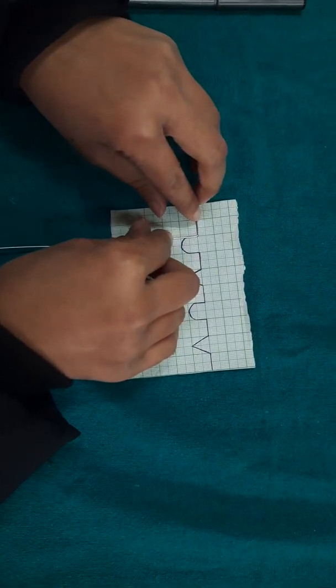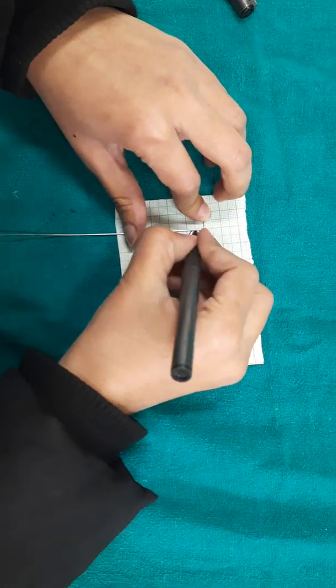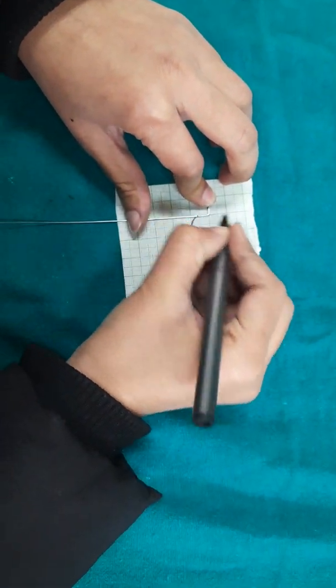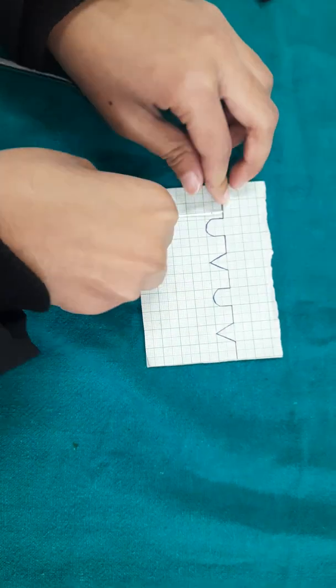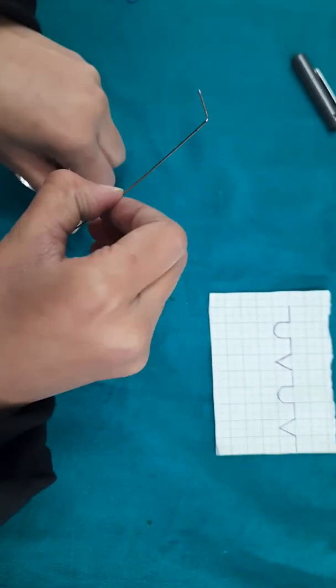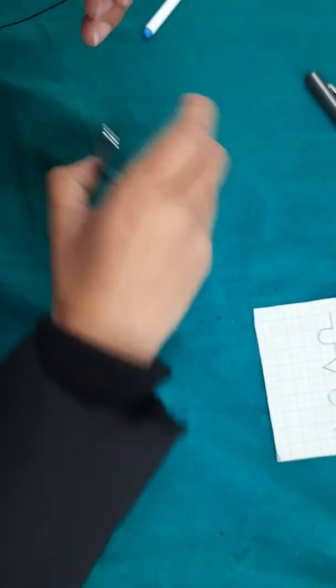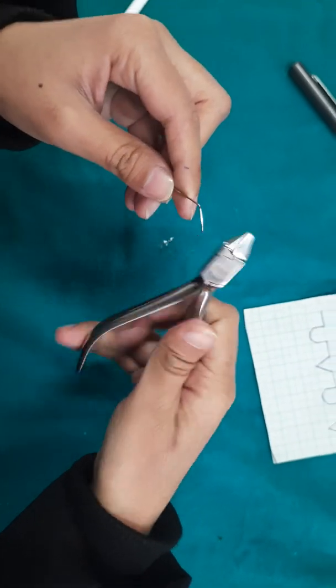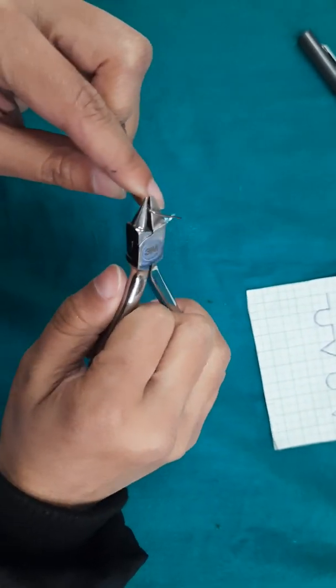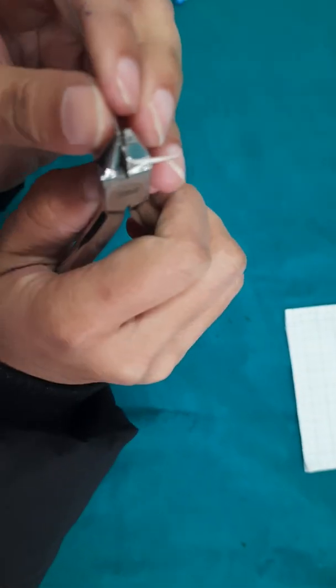Now adjust the wire on the graph paper and mark a point 5 to 6 mm away and start giving a smooth U-bend by walking the round side of the plier on the wire.